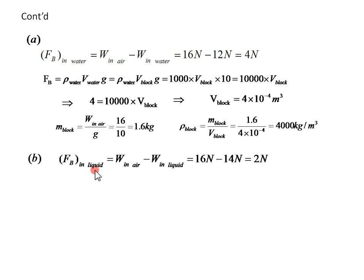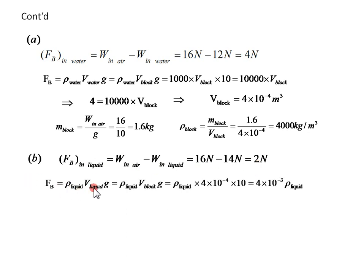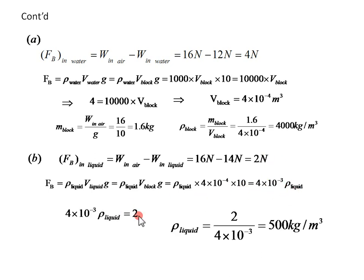From the information given about the liquid, the buoyant force in the liquid is weight in air minus weight in liquid, and we get 2 Newton. Buoyant force is density of liquid times volume of liquid times G. I have replaced volume of the block for the volume of the liquid because, again, the object is completely submerged. We get 4 × 10⁻³ times density of the liquid. Setting these equal, density of the liquid is 500 kilograms per cubic meter.